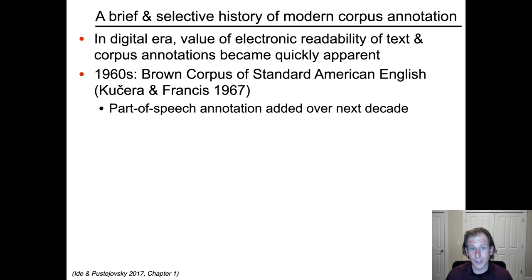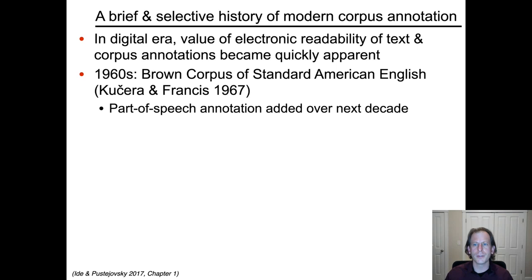This led to Kuchera and Francis, 1967, which is a landmark publication. The Brown Corpus is about a million words — a fairly balanced collection of English texts of various genres. Parts of speech were annotated on top of this, with a part-of-speech annotation convention that was determined and applied. By the 1970s you had a POS-annotated corpus of a million words. This is very small by contemporary standards, but it was very influential and is still an important reference corpus today.